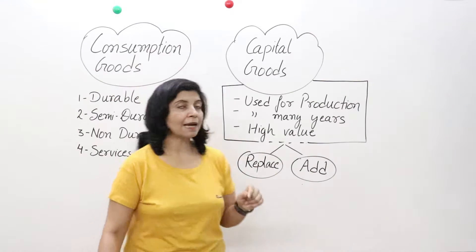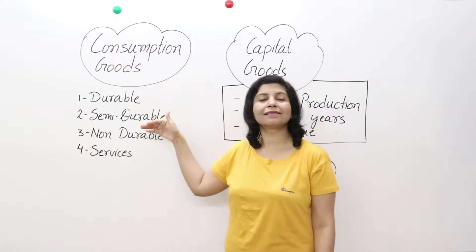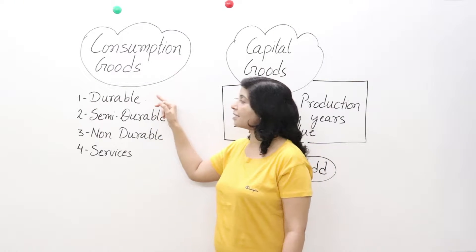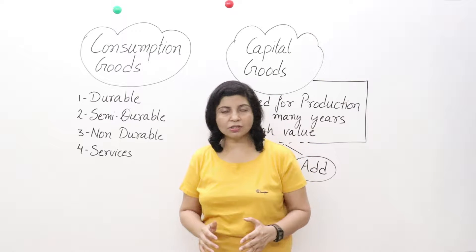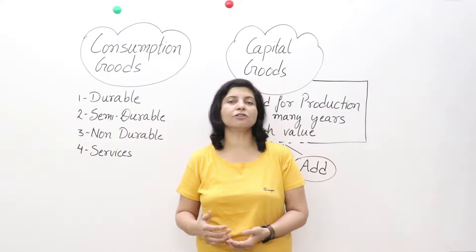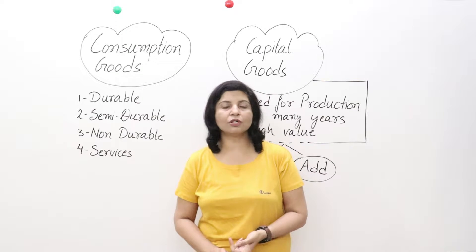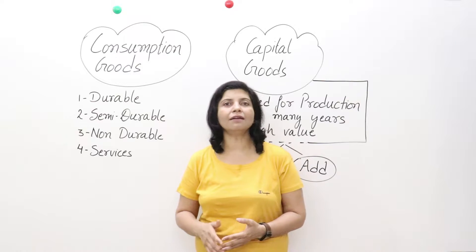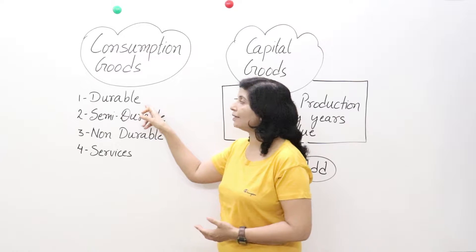The types of consumption goods are: durable goods, semi-durable goods, non-durable goods, and services. First, durable goods — these are goods which can be used for a long period of time, maybe 10 years or more. For example, we use cars, scooters, refrigerators, and televisions for more than 5 to 10 years, so they are durable.